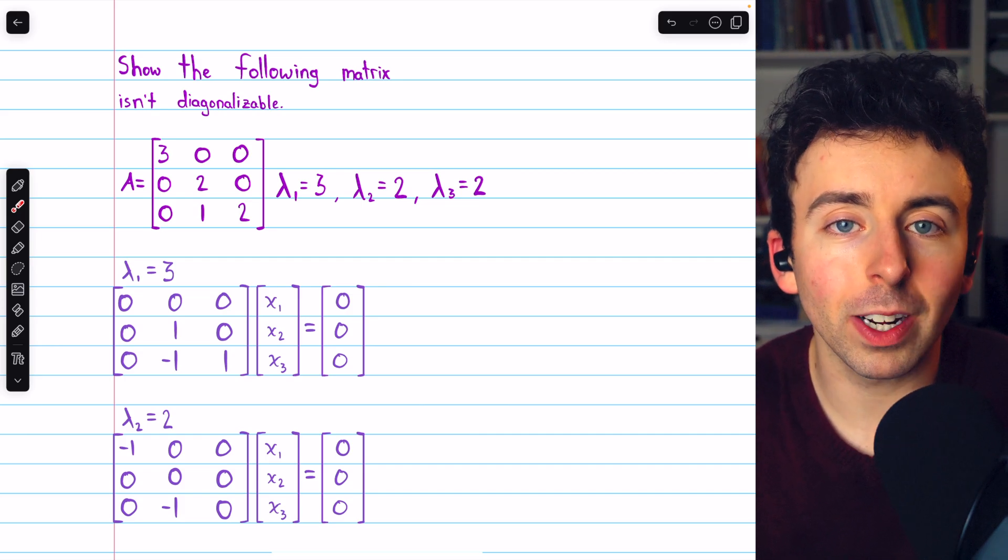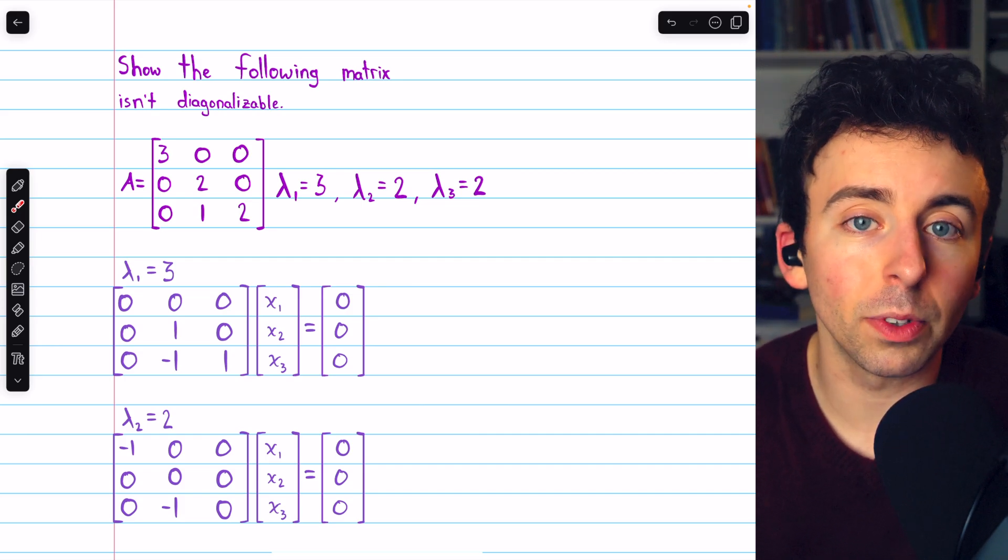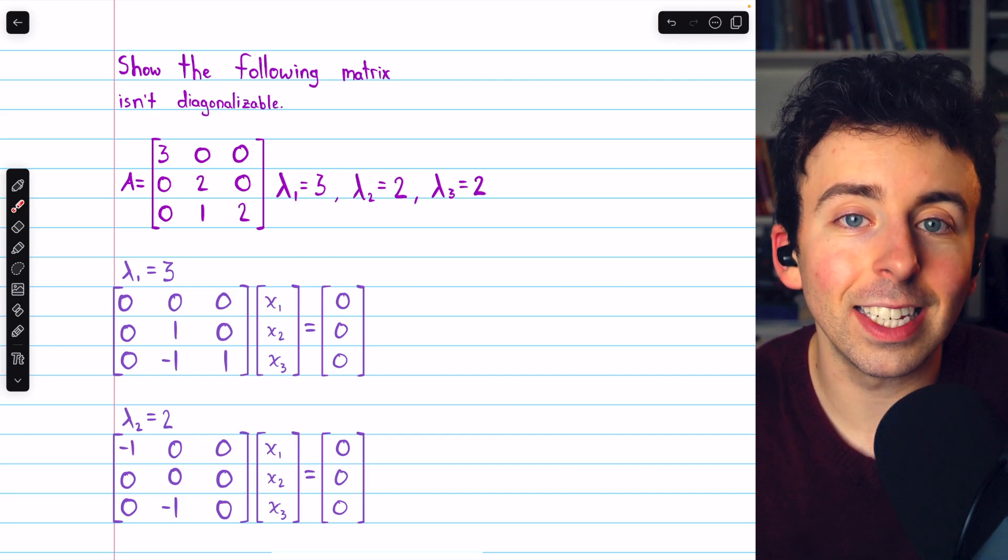Since it's a 3 by 3 matrix, its nullity must be 1, because rank plus nullity equals n. Similarly, this matrix has a rank of 2, and so its nullity is 1.